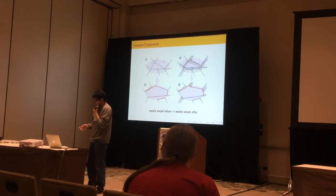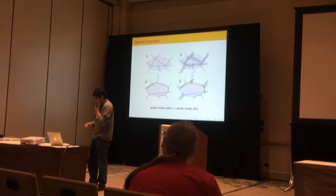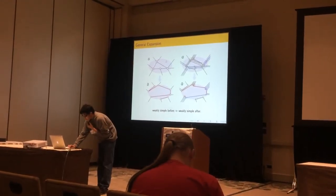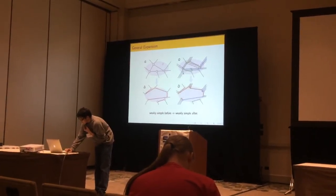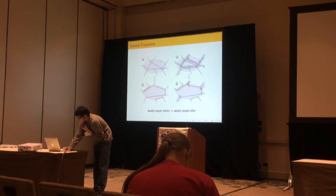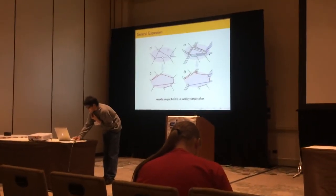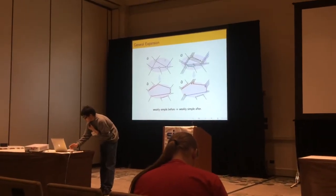The way we expand is, we first draw the topological disk, and for every path that enters this disk and then leaves this disk, we straighten the path. And we do this on all of them.